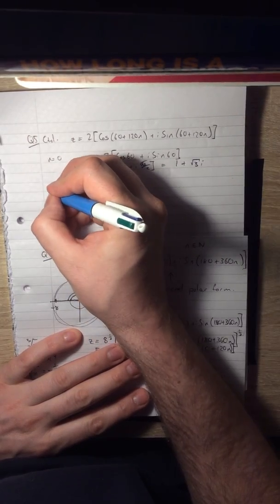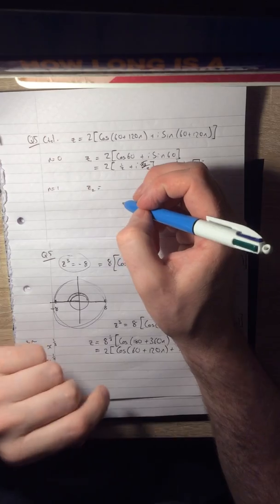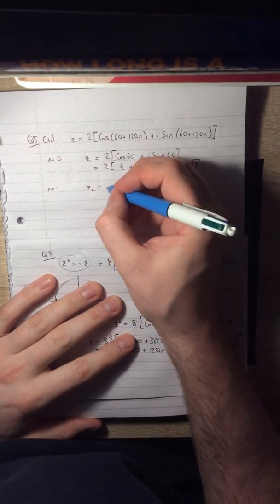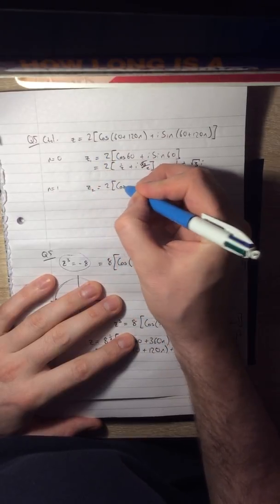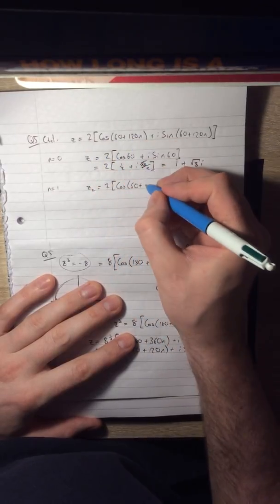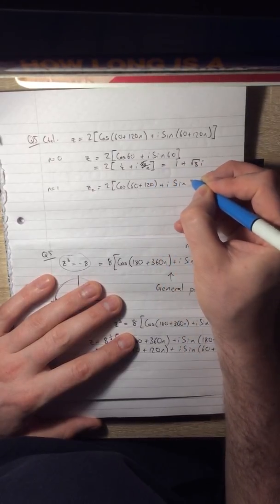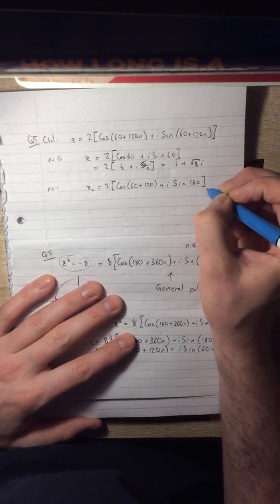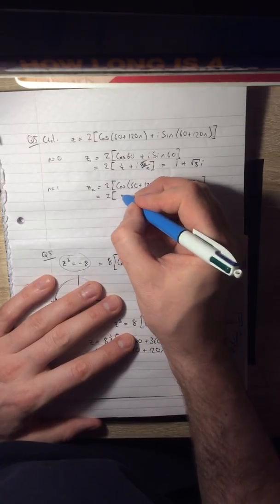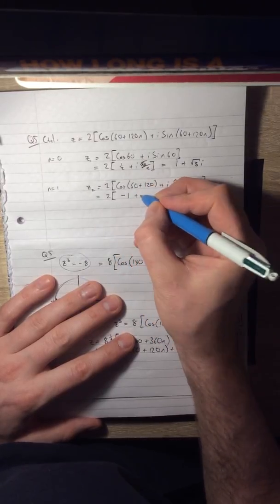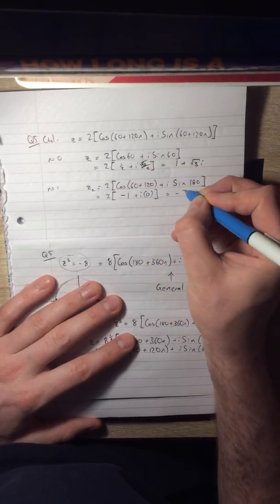Another one is when n equals 1. So our second root becomes 2 times cos(60 + 120) + i sin(180). So that's going to be 2 times cos 180 is -1, and plus sin 180 is 0. So that's going to be -2.